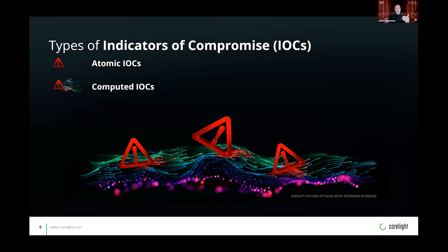Then we have computed indicators. They're derived from calculations like JA3s, file hashes, or certificate hashes. This type of indicator is more involved in that it requires additional functions to be enabled on a sensor or possibly a SIEM to perform additional data collection and calculations.